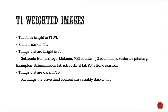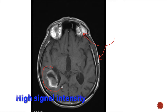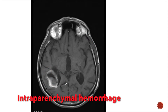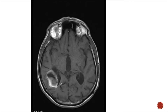Besides this, things that are bright in T1 are subacute hemorrhage, melanin, and MRI contrast media or gadolinium. In this T1 weighted image, we can see that the retro-orbital fat is appearing very bright and the subcutaneous fat is also appearing bright. We can also appreciate an area of high signal intensity in the right posterior temporal lobe. This lesion is an intraparenchymal hemorrhage. Other causes of hemorrhage in the brain parenchyma, like hemorrhagic metastasis, may also appear bright on T1 weighted image.